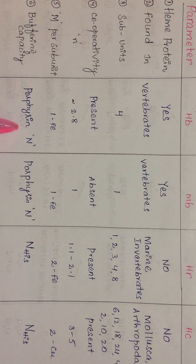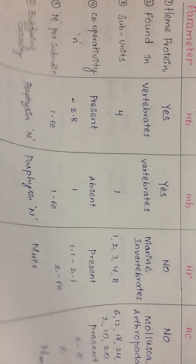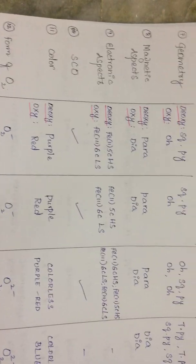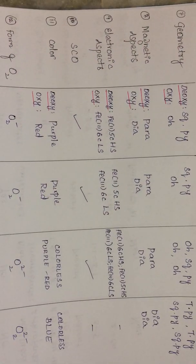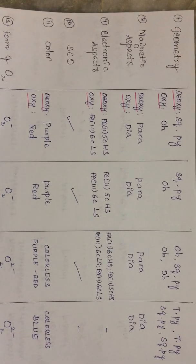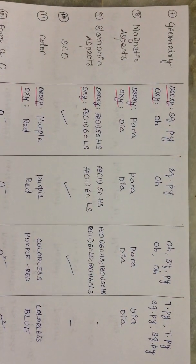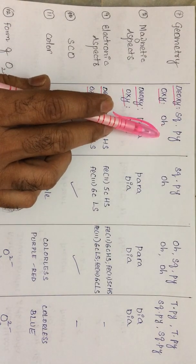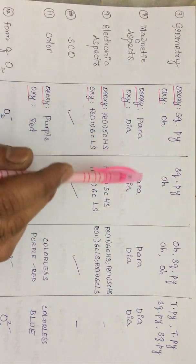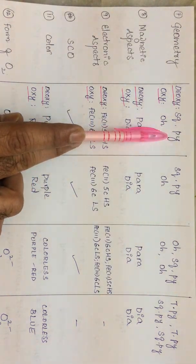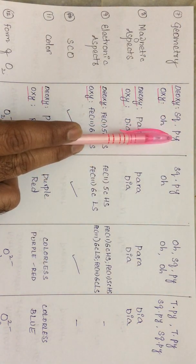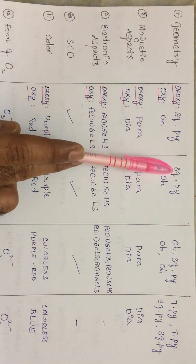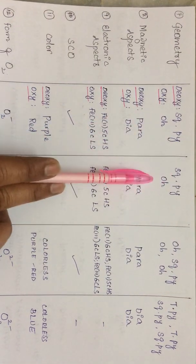Regarding geometrical aspects, comparing deoxy and oxy forms: in hemoglobin and myoglobin, the deoxy form is square pyramidal (also called tetragonal geometry, with some distortions), whereas the oxy form is octahedral — almost a perfect octahedral.